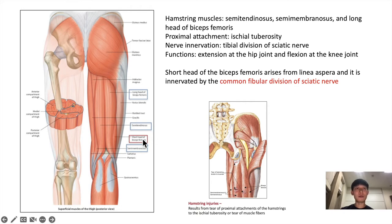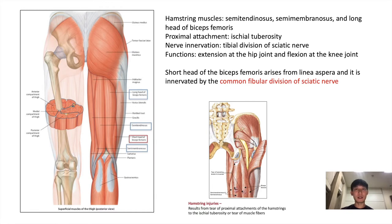Another muscle to learn about is the short head of the biceps femoris. This arises from the linea aspera of the femur and is innervated by the common fibular division of the sciatic nerve, not the tibial division.